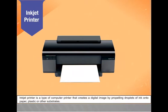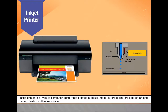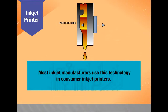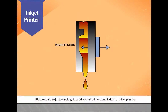An inkjet printer is a type of computer printer that creates a digital image by propelling droplets of ink onto paper, plastic, or other substrates. Currently, most inkjet printers use either thermal inkjet or piezoelectric inkjet technology. Most inkjet manufacturers use thermal inkjet technology in consumer inkjet printers, while piezoelectric inkjet technology is used with all printers and industrial inkjet printers.